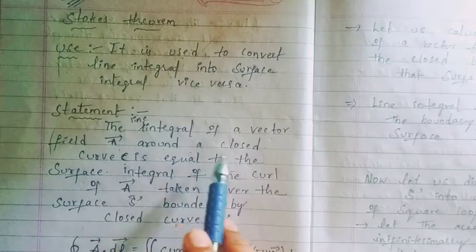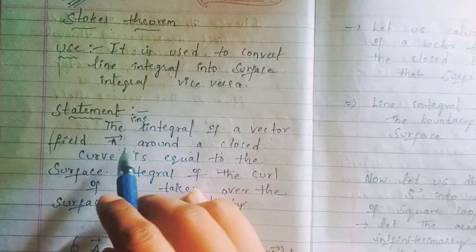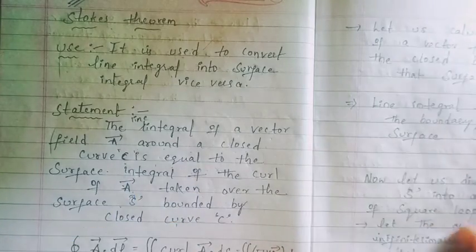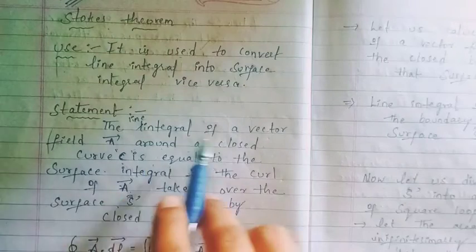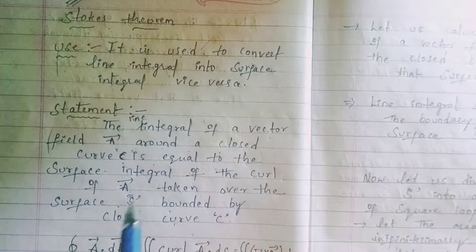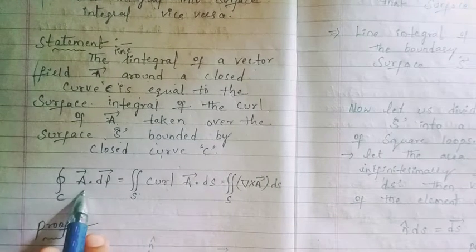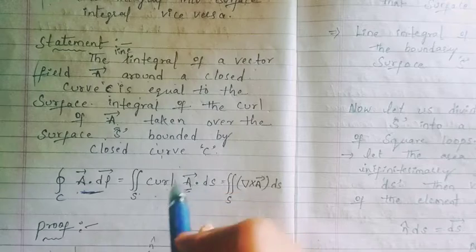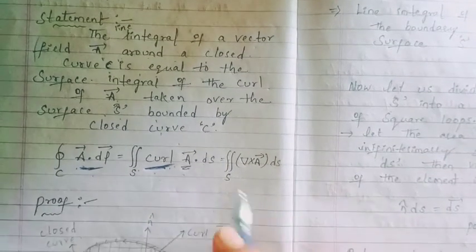The statement of Stokes Theorem is: the line integral of a vector field A around a closed curve C is equal to the surface integral of the curl of A, taken over the surface S bounded by the closed curve. Mathematically, the line integral of A is equal to the surface integral of curl of A, where curl of A is represented as del cross A.